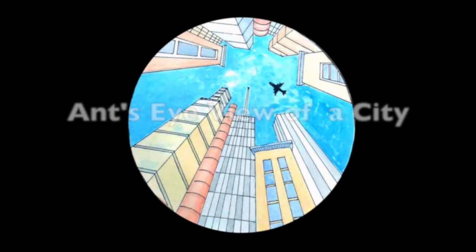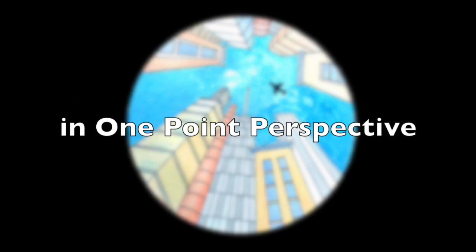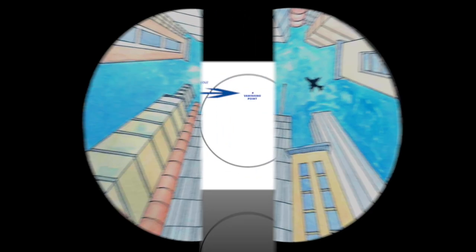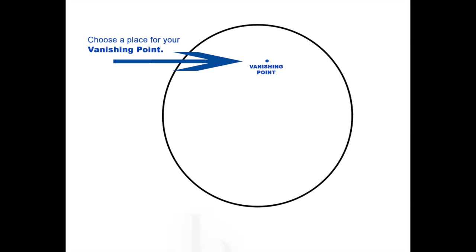This tutorial will help you to draw the ant's eye view of a city using one-point perspective. Start with a pencil and choose a place on your paper to add your vanishing point.